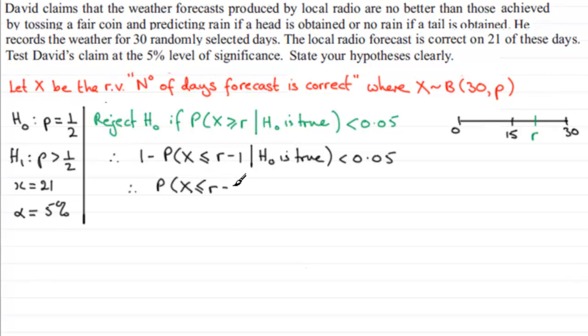...has to be greater than 0.95. That's just simply rearranging that above inequality. Now I'm going to use my tables.